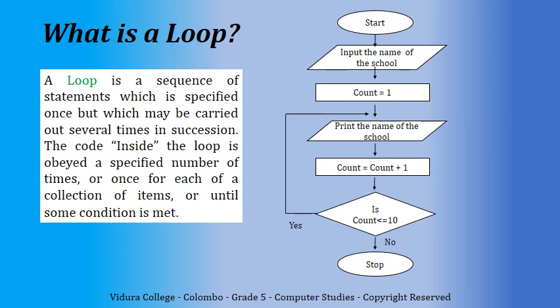First, you start the flowchart. Then, there is an input saying, input name of the school. Then, there is a process. Here, you initialize the counter. You start the counter with one. After that, you print the name of the school.